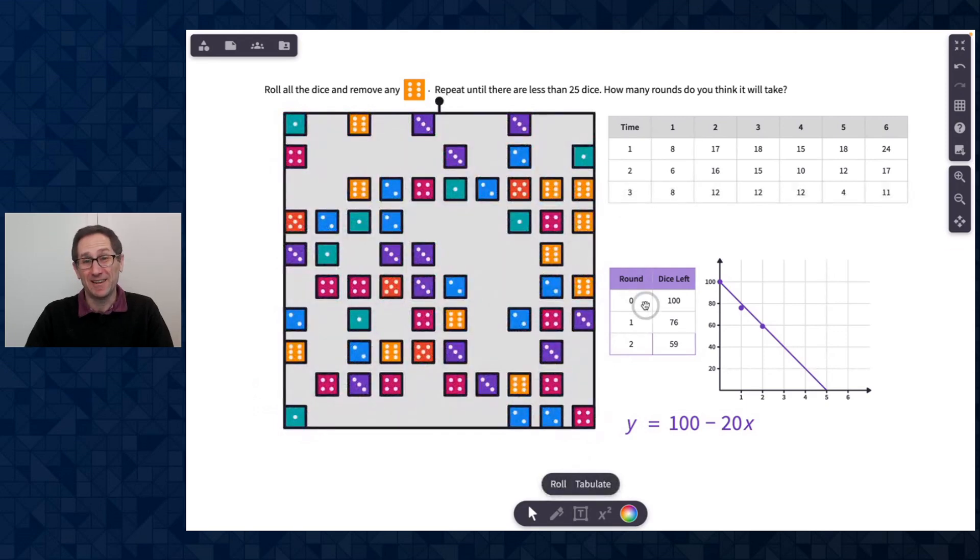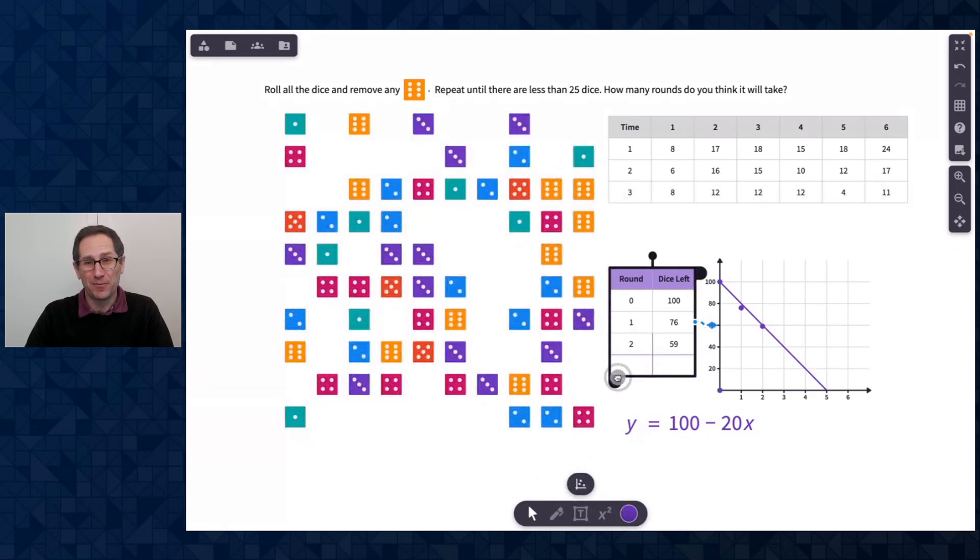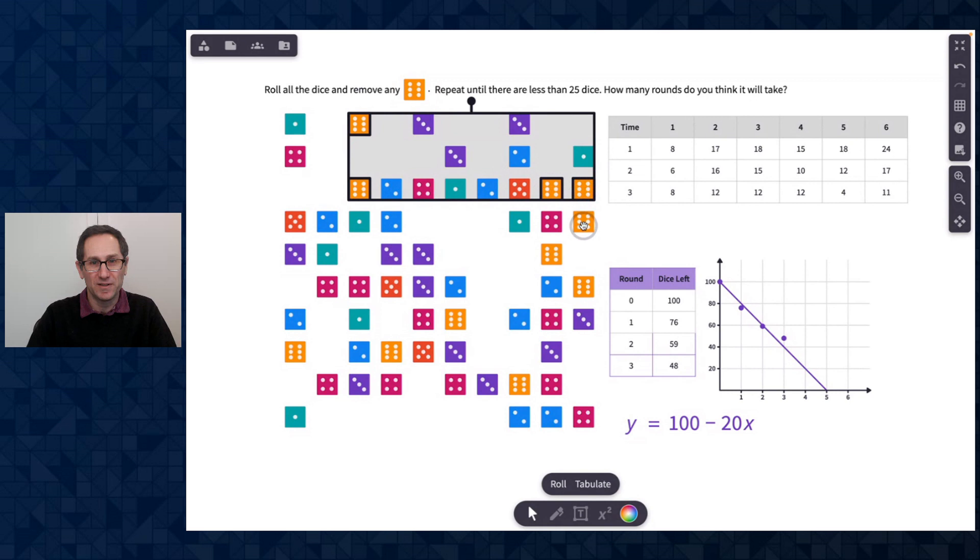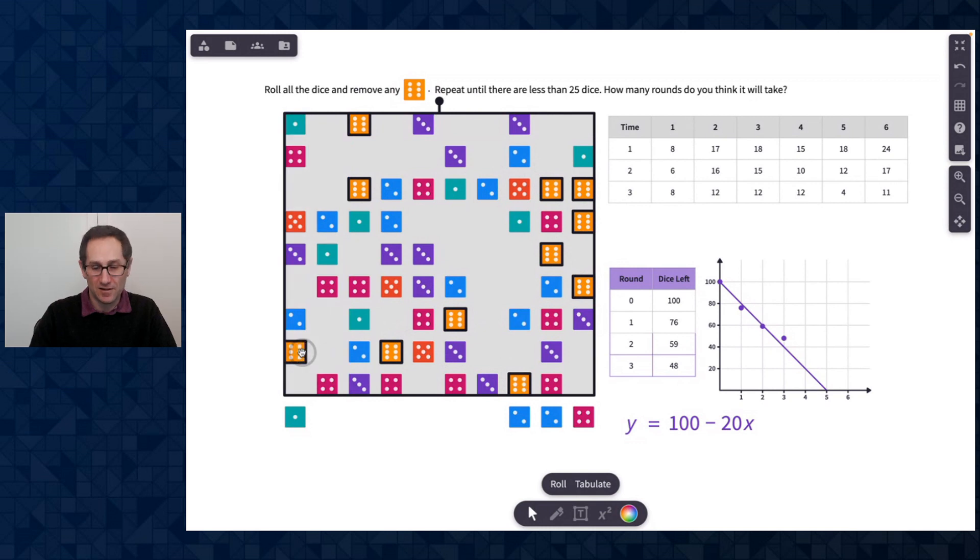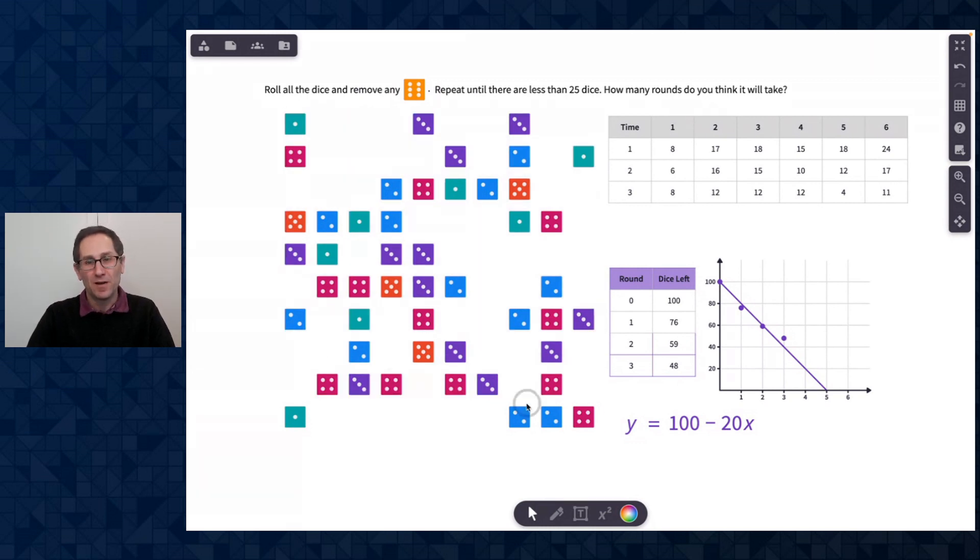And this time I only got 11. So let me add a row to the table. And after three rounds, 59 minus 11 is 48. Well, that doesn't look great on my model, but first let me delete all of these 11. Again, I'm holding down the shift key to select all these sixes at once. I think that's all 11 of them. There we go.